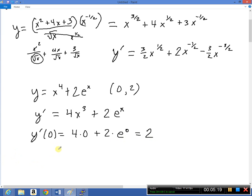So we can just write the equation now, y minus 2 equals the slope, which is 2, times x minus 0. End of problem.